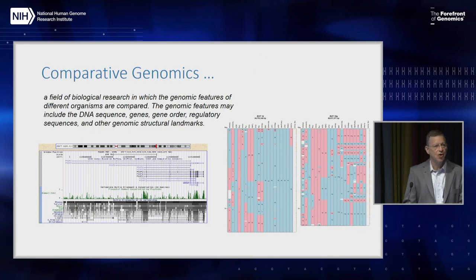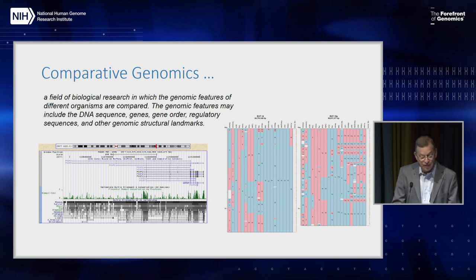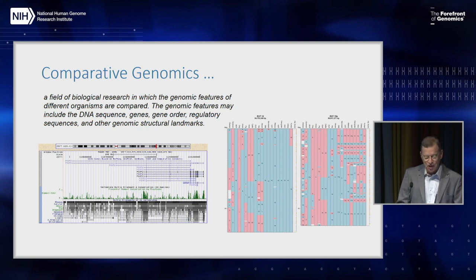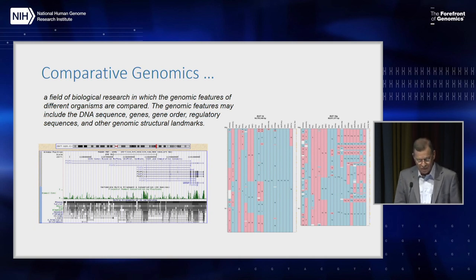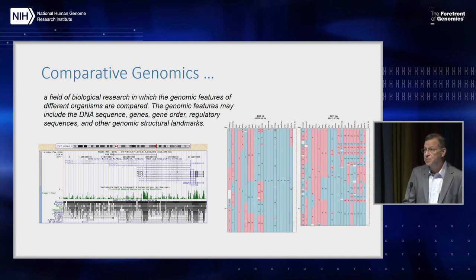So what is comparative genomics? It is a field of biological research in which genomic features of different organisms are compared. The genomic features may include DNA sequences, genes, gene order, regulatory sequences, and other genomic structural landmarks, such as three-dimensional structure.